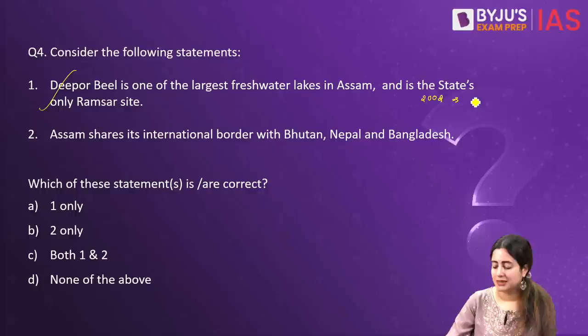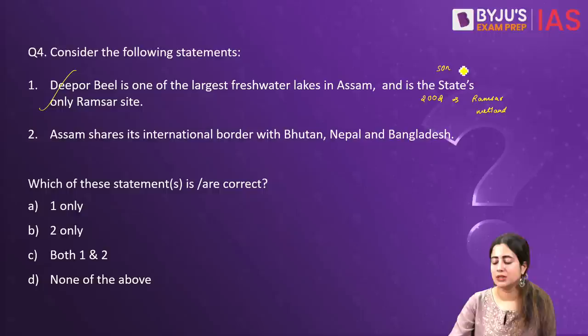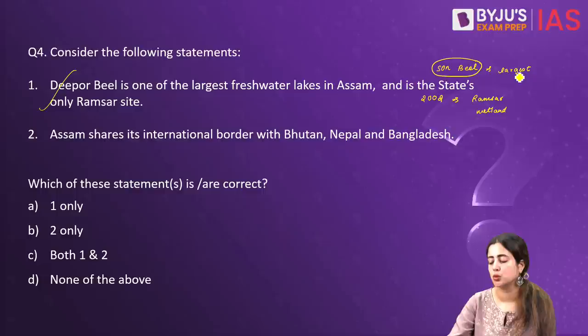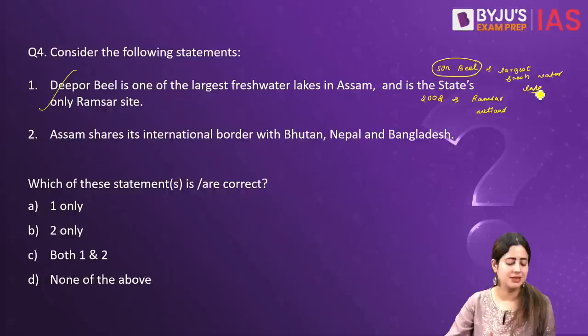This statement is valid because Deepor Beel, a huge freshwater lake near Guwahati, was given the status of a Ramsar-identified wetland back in 2002. We should not confuse this with Son Beel — another lake in Assam — because if talking about the largest freshwater lake in Assam, that happens to be Son Beel. But in this question we are referring to the only Ramsar wetland from the state so far — Deepor Beel. So the first statement is valid.